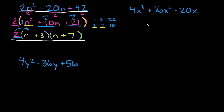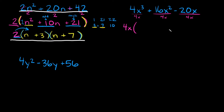So now let's go to this next example: 4x cubed plus 16x squared minus 20x. Again, the first thing you want to do is figure out if there's anything you can factor out of all three terms. In this case there is — all three terms are divisible by 4x. So that means we can pull out a 4x from each of them.